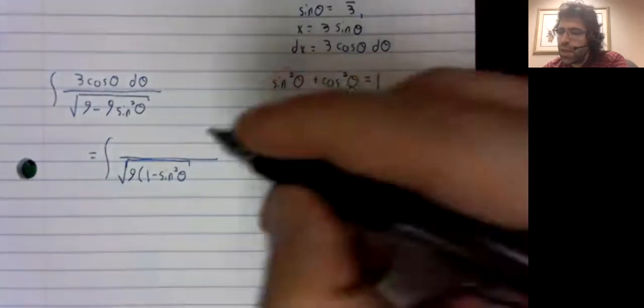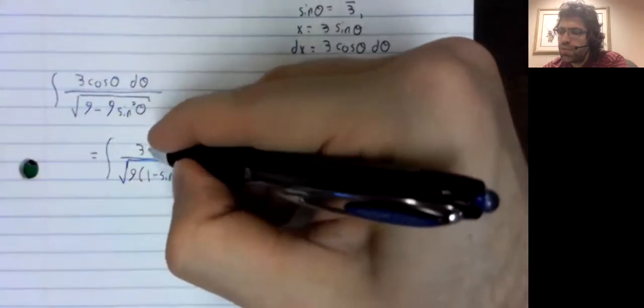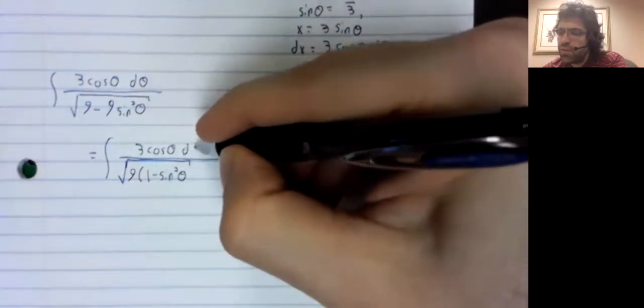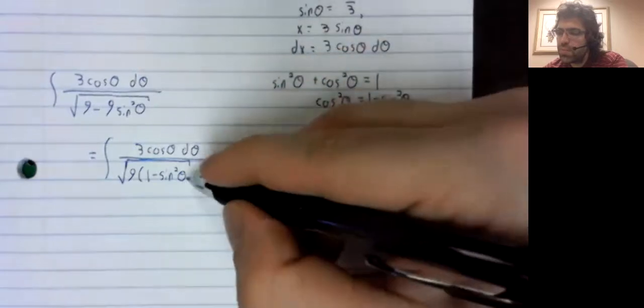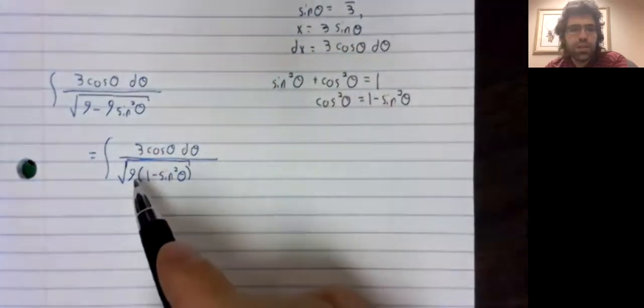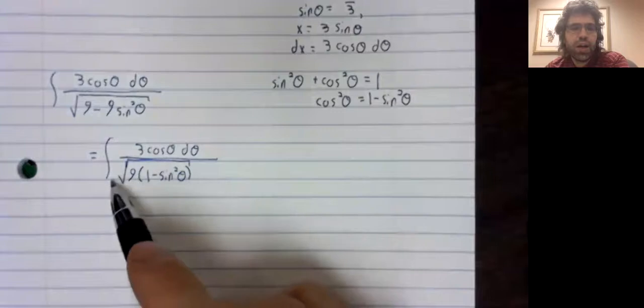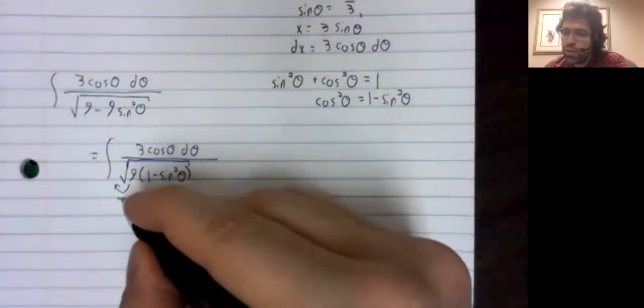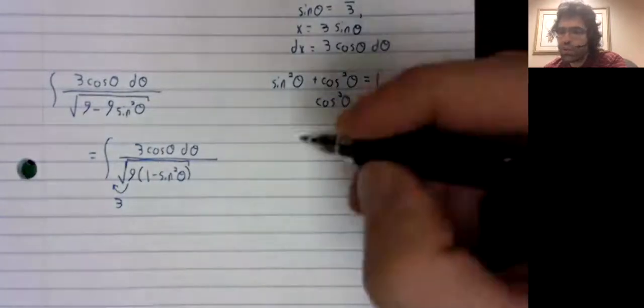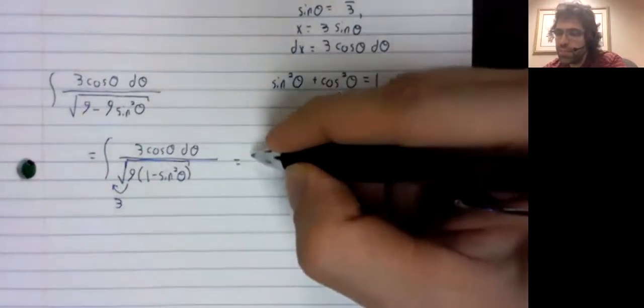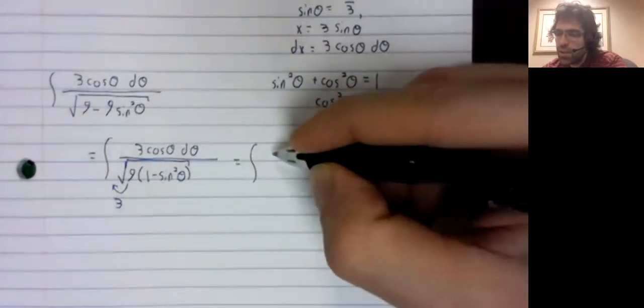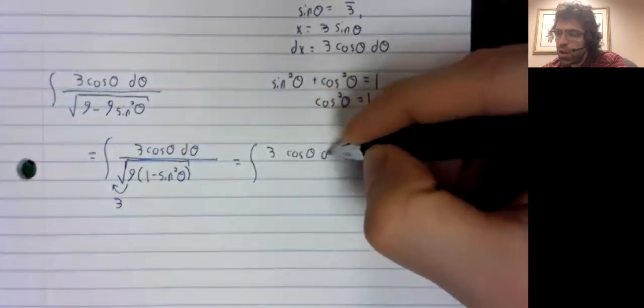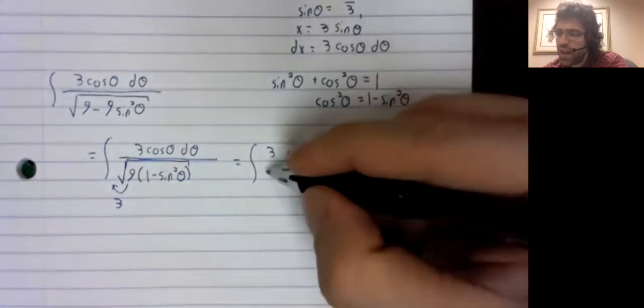And in the numerator, we still have this. This nine comes out of the square root. The square root of nine is a three.